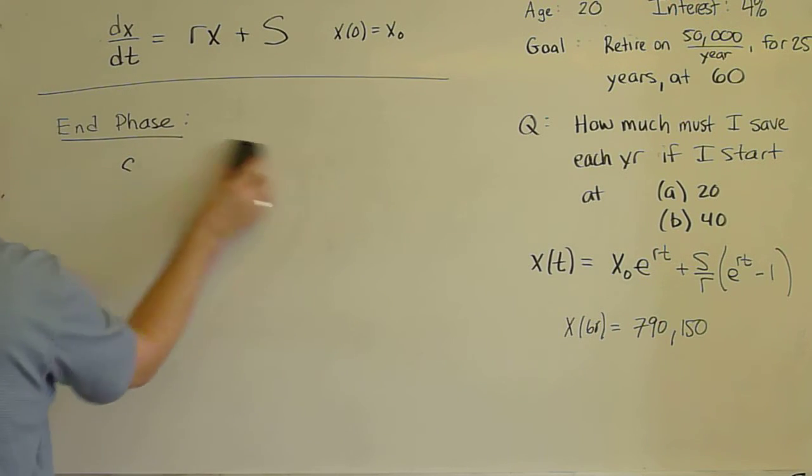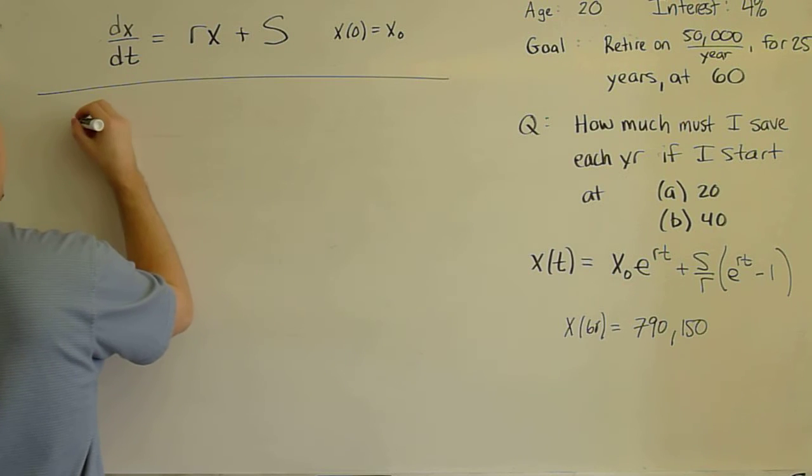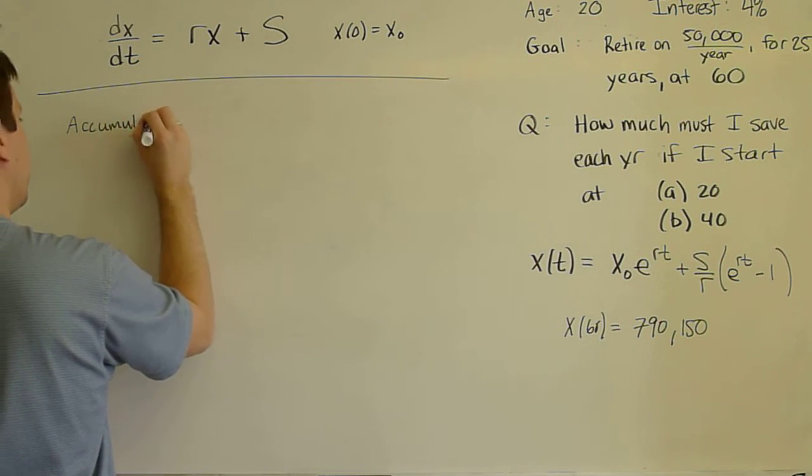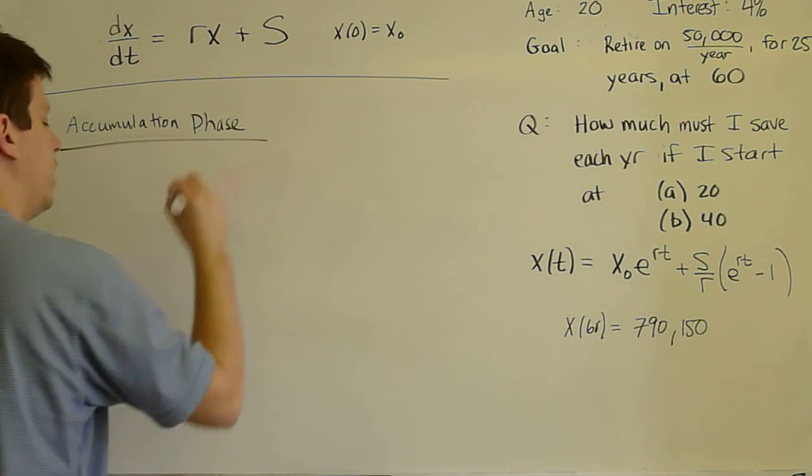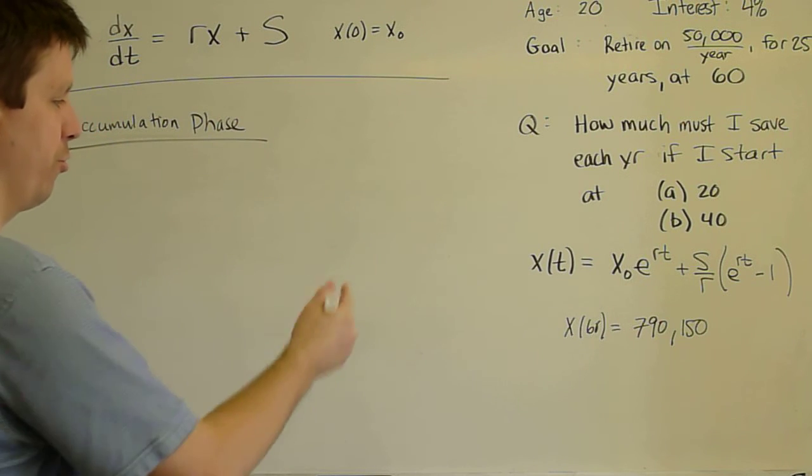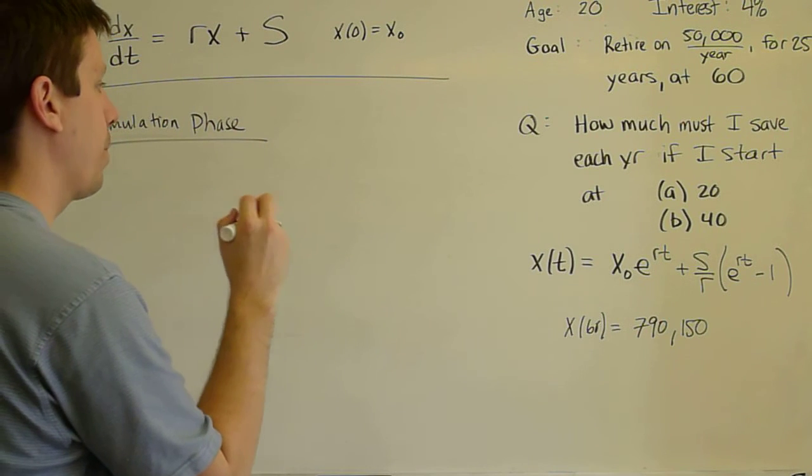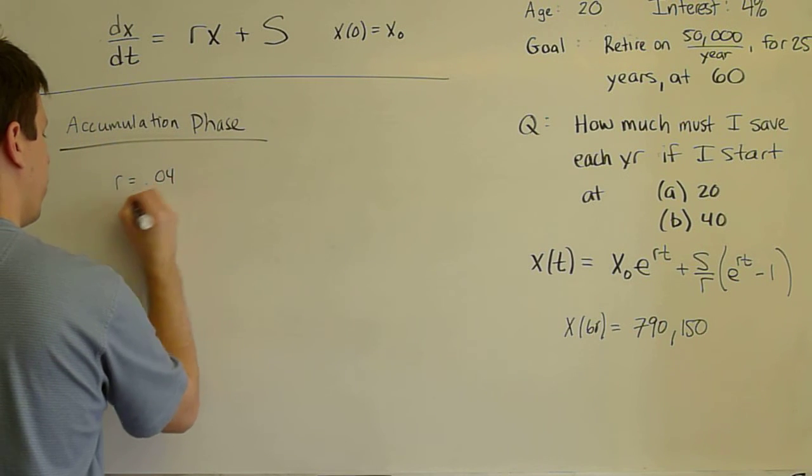The second half of the problem is the accumulation phase. If I start saving at age 20, how much do I need to save every year in order to achieve that goal? So now we have a different set of numbers.